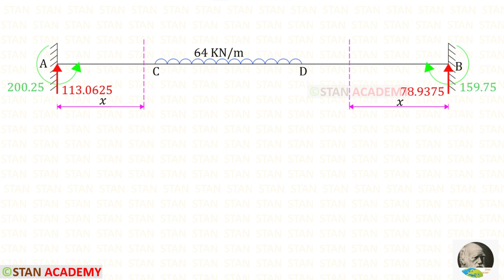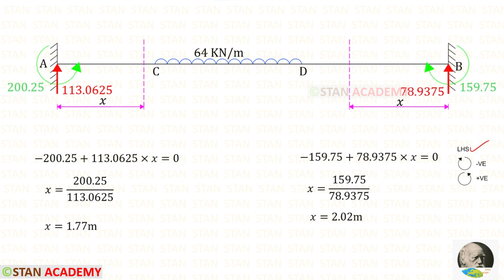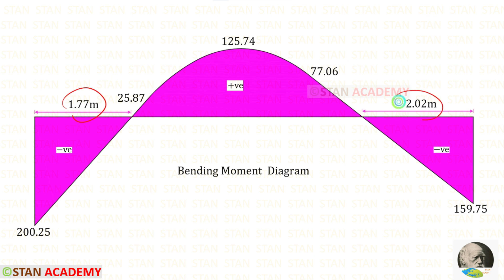We make two sections at the points where the bending moment is zero: the first at distance x from point A, and the second at distance x from point B. Using the right-hand side rule for the first section gives x = 1.77 meters. Using the left-hand side rule for the second section gives x = 2.02 meters. This concludes the analysis. Thank you for watching this video.